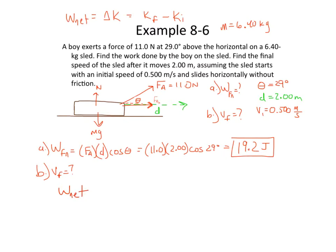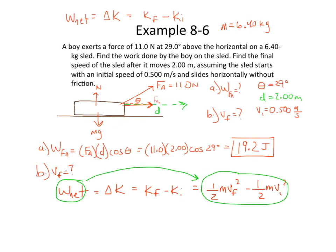network equals change in kinetic energy. That's kinetic final minus kinetic initial, which equals one-half MV squared final, mass times velocity final squared, minus one-half mass times initial velocity squared. And we actually do have an initial velocity this time. That's 0.5 meters per second, so this is not going to cancel out. But the fact that we have a known network, and we have that equal to this change in kinetic energy right here, we're going to set these two equal to each other and then solve.